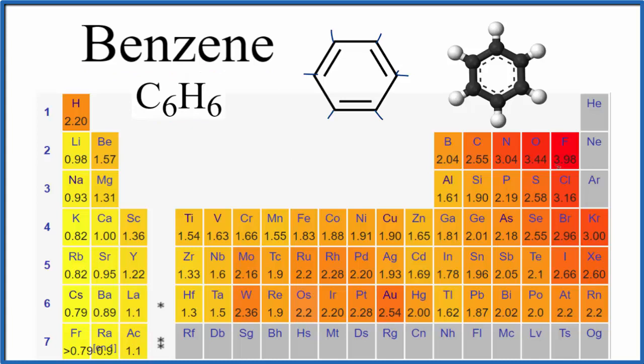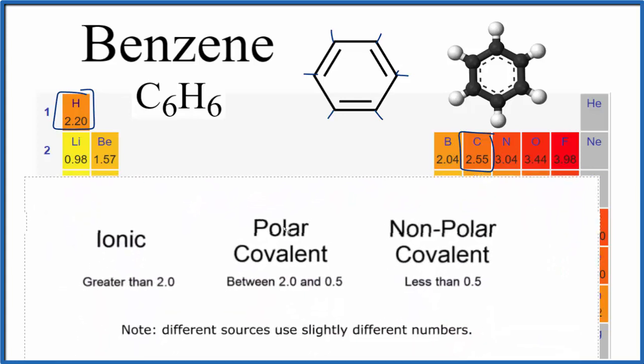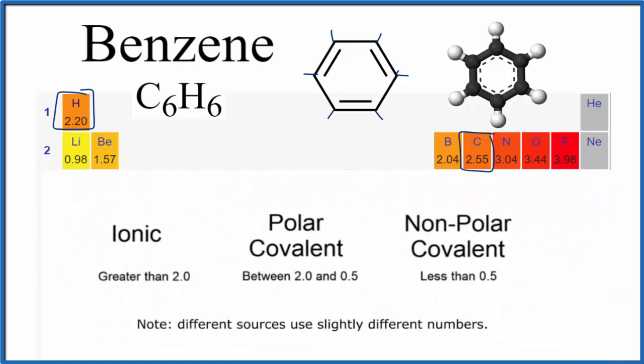So we look at the electronegativity, here's carbon right here, 2.55, here's hydrogen. We have a difference of 0.35 in electronegativity. We look at this general rule here, if we have less than 0.5, we have what we call a nonpolar covalent bond. So these are all nonpolar covalent bonds. They have a slight dipole, but not very much.